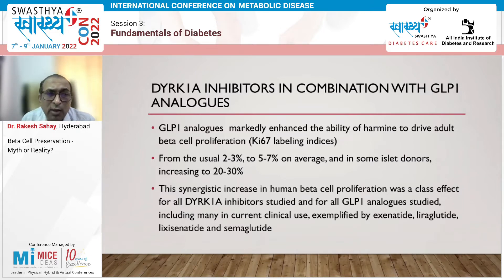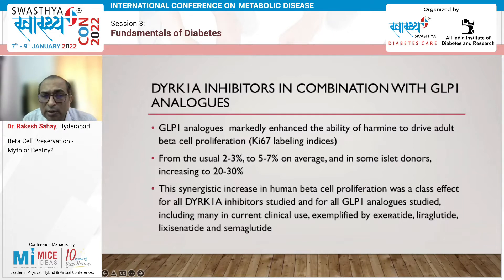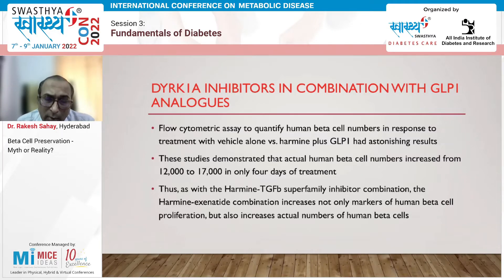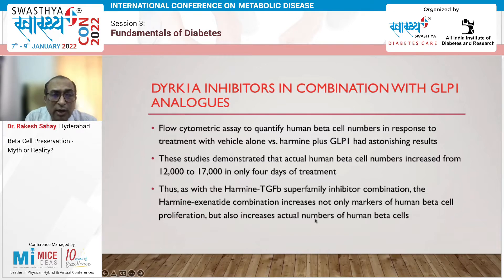Sulfonylureas and meglitinides did not show any promise in increasing beta cell proliferation. But when GLP-1 analogues were used, they increased proliferation from 2-3% seen with DYRK1A inhibitors alone to 20-30%. This was seen with liraglutide, lixisenatide, exenatide, and semaglutide. Maximum studies were done with exenatide but results were seen with all GLP-1 analogues.